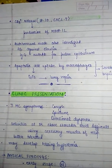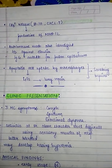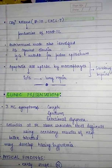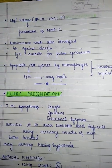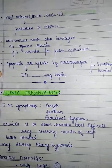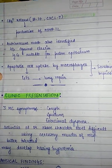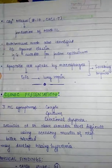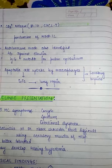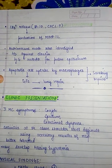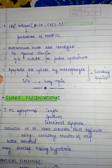CD8 T cells release IP-10, which increases the production of MMP-12. An autoimmune mechanism is also identified: antibodies against elastin and IgG autoantibodies against pulmonary epithelium. Normally, macrophages uptake apoptotic cells and release growth factors leading to lung repair, but smoking impairs all these factors.